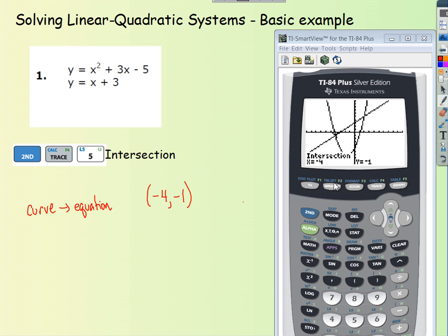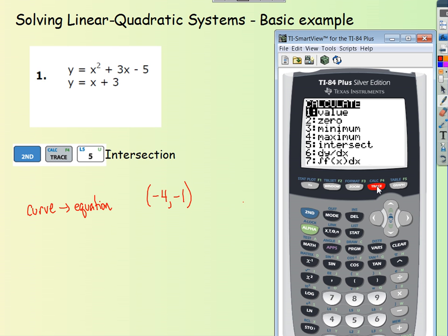Alright, so we go ahead and do the same process again to find the other intersection. We don't have to change the screen, change anything. We just hit second, trace, which takes me to that calculate right there in blue. We choose number 5.